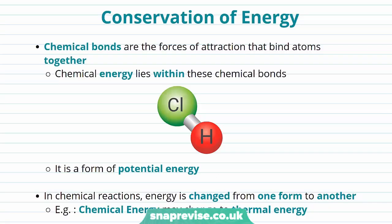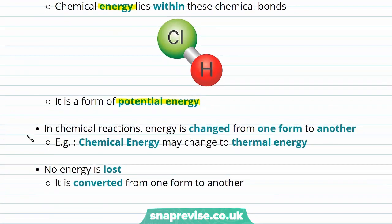Let's begin by having a look at the conservation of energy — a concept you may well have heard of before. Chemical bonds are the forces of attraction that bind atoms together. Chemical energy lies within these bonds and is a form of potential energy. In chemical reactions, energy is changed from one form to another — for example, chemical energy may be changed to thermal energy. No energy is lost; it is simply converted from one form to another.